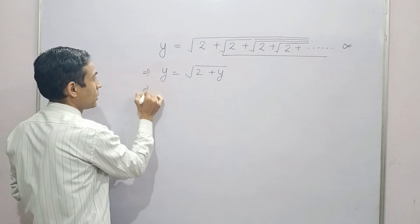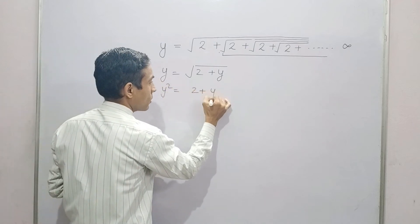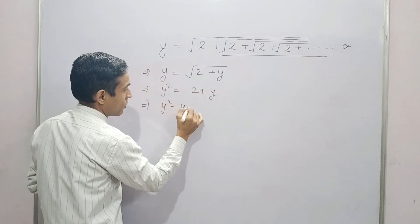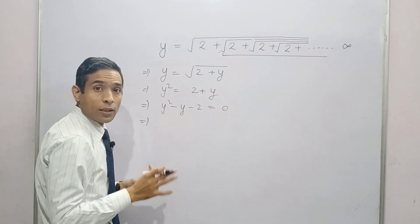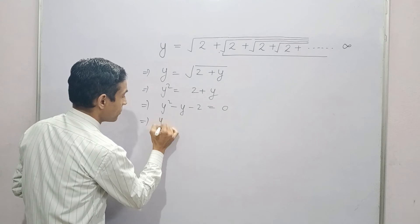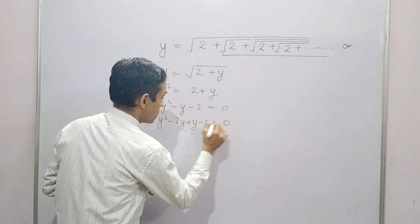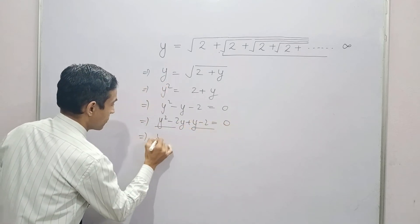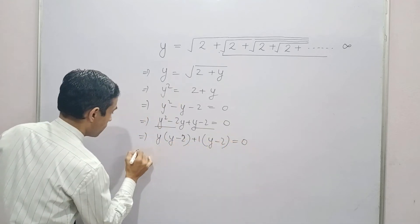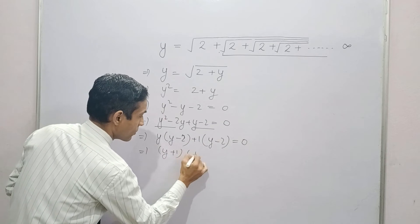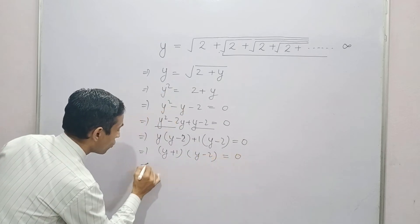Now squaring both sides, this becomes a quadratic equation. Let's apply splitting middle term method. Pairing common out. This gives two values of y.